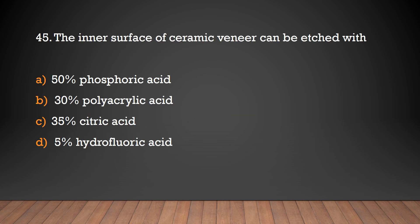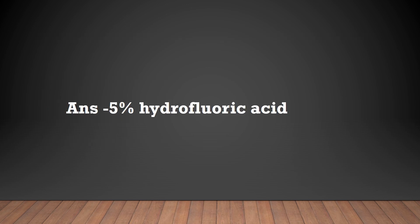The inner surface of a ceramic veneer can be etched with which of the following: 50% phosphoric acid, 30% polyacrylic acid, 35% citric acid, or 5% hydrofluoric acid? The answer is: 5% hydrofluoric acid.